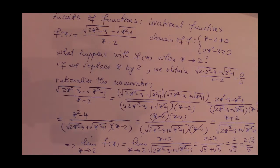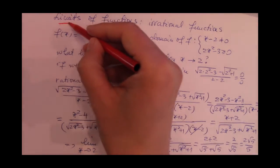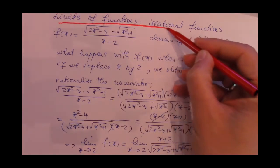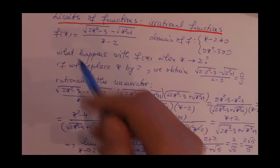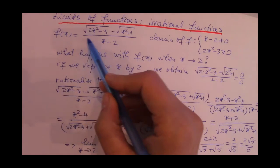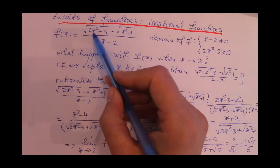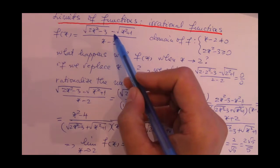We will continue our discussion on limits of functions. This time we are going to look at irrational functions. Let's consider this function f(x) equals the square root of 2x squared minus 3 minus the square root of x squared plus 1, all over x minus 2.